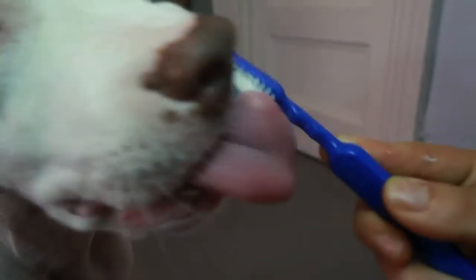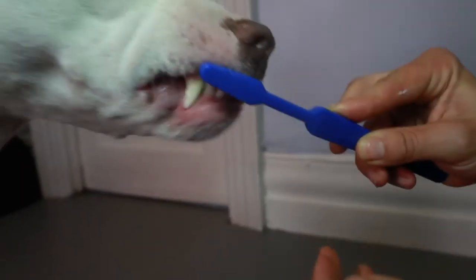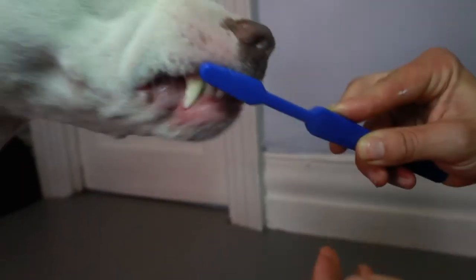The next step, put some of that tasty toothpaste on the toothbrush, and let your dog just lick it off. Let them get used to the idea of the toothbrush touching their mouth before you try to brush any teeth.